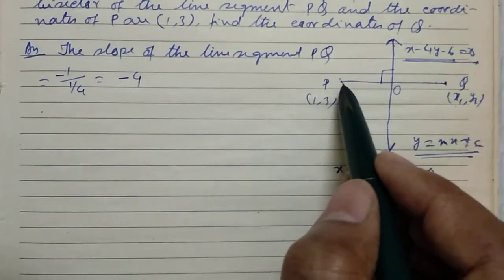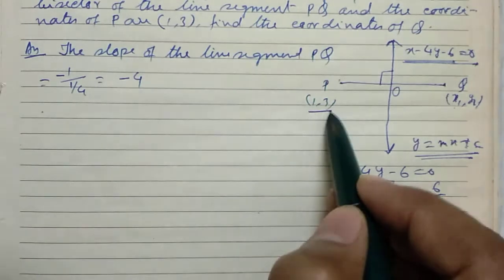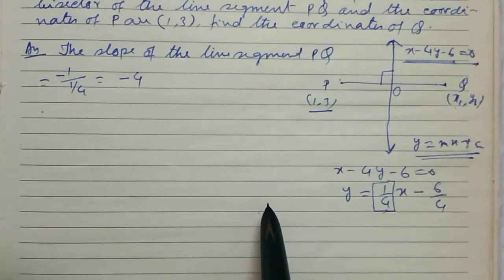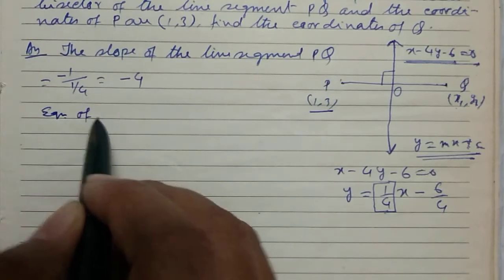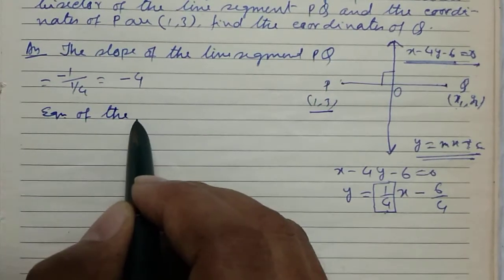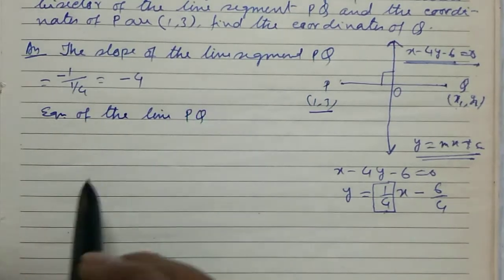Again, this line must pass through (1, 3). Hence, equation of the line PQ.